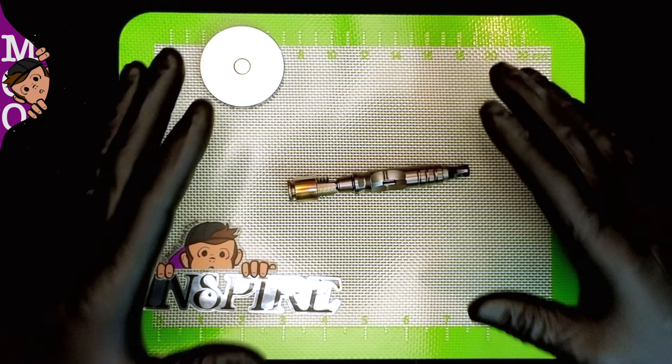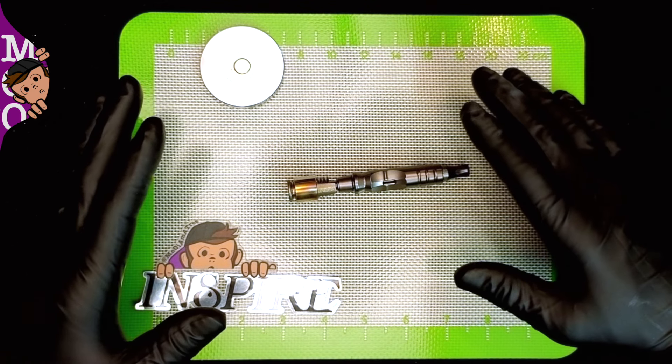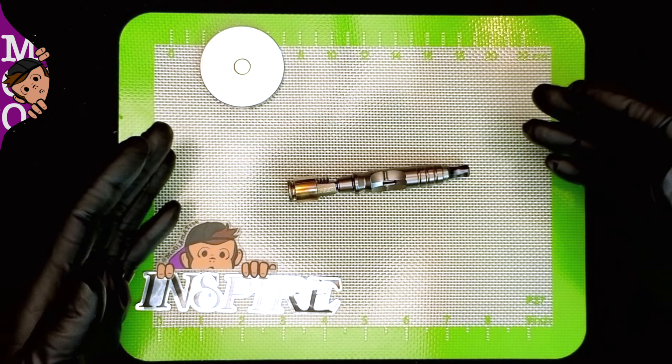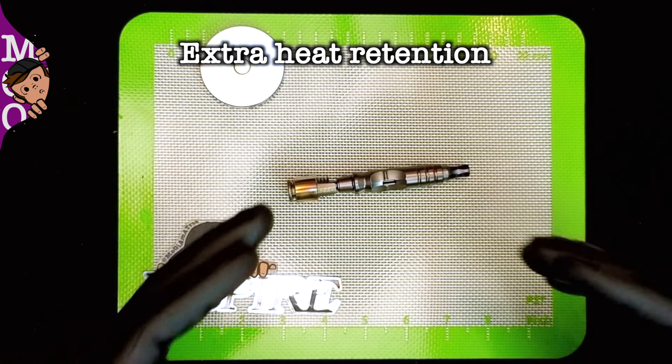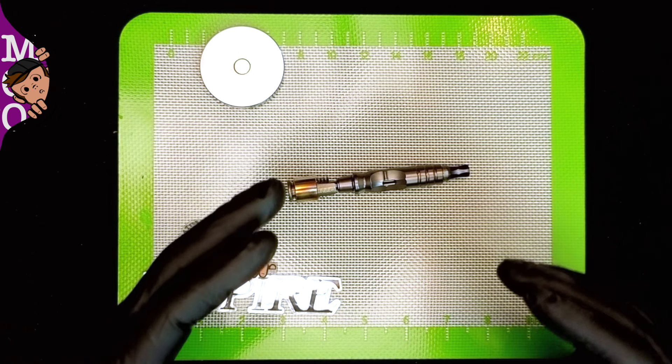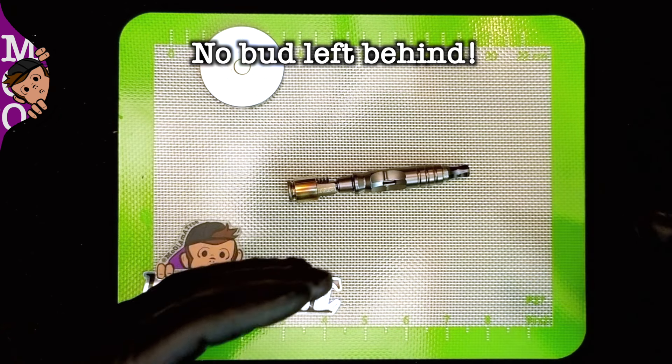The FMJ has added performance to the Hyperdyne just like it did to the smaller Dynavaps and it really does help. The extra time that it stays hot really helps push through all that extra vapor and I no longer feel like I'm leaving anything behind in the Hyperdyne.